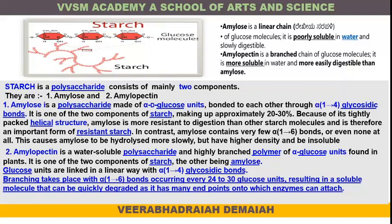Amylose is more resistant to digestion than other starch molecules and is therefore an important form of resistant starch. In contrast, amylose contains very few alpha-1,6 bonds, or even none of them, which causes amylose to be hydrolyzed more slowly, have higher density, and be insoluble.